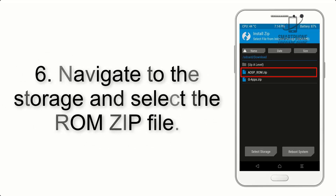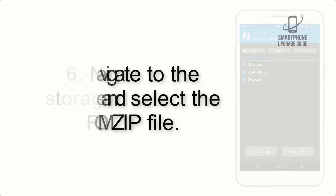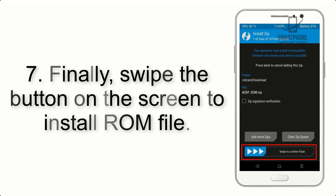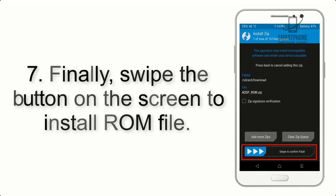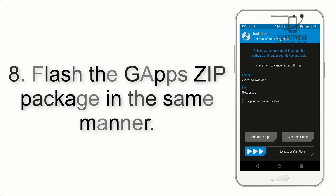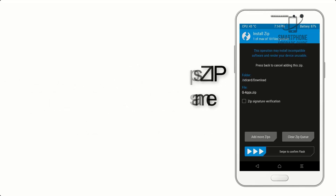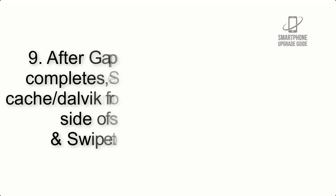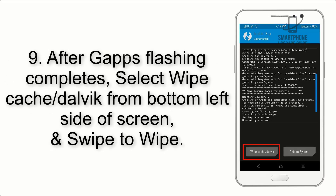Step 6: Navigate to the storage and select the ROM zip file. Step 7: Finally, swipe the button on the screen to install the ROM file. Step 8: Flash the GApps zip package in the same manner.